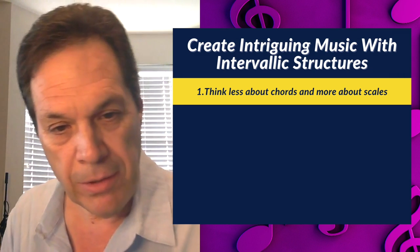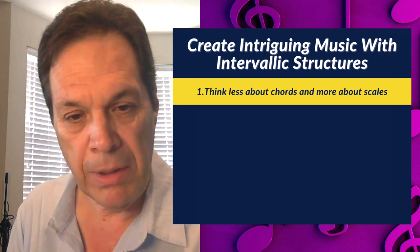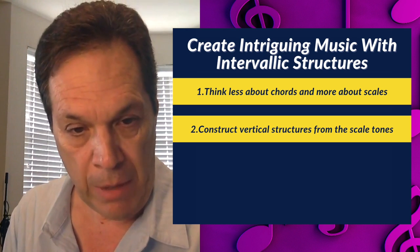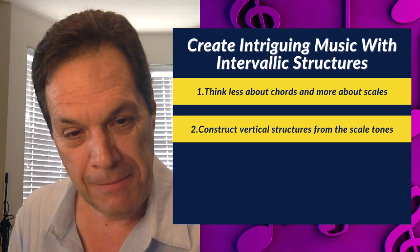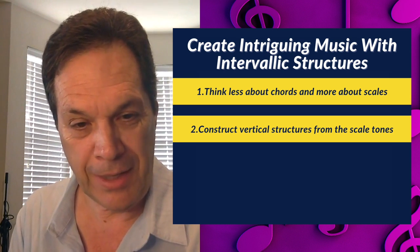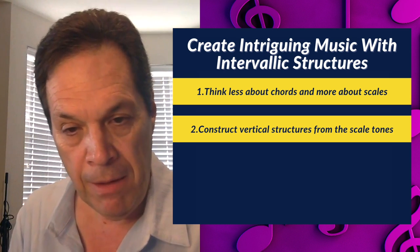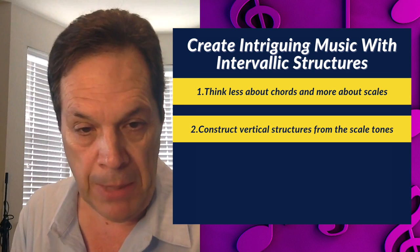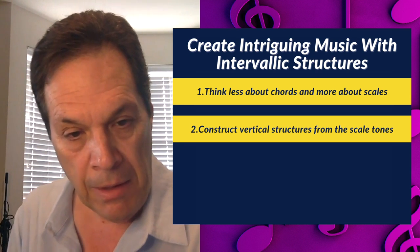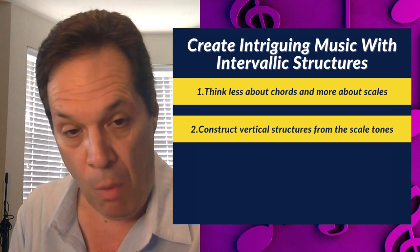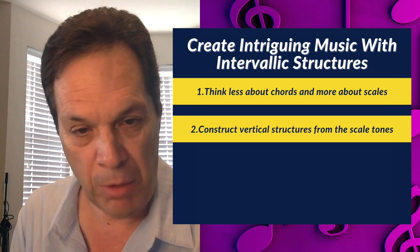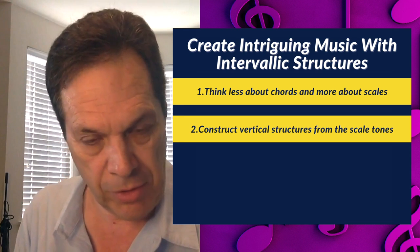Point two is to construct a vertical structure. Now a vertical structure could be a triad, but it could also be a sus2 — something like C, D, and G. It can be stacked fourths: C, F, and B-flat. These notes come from one scale, whether it's a conventional scale or less conventional.